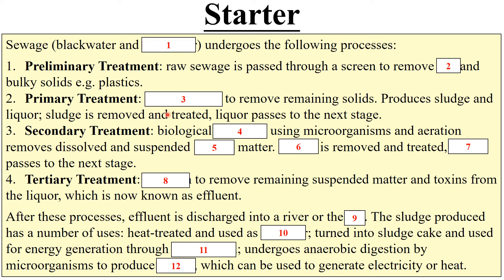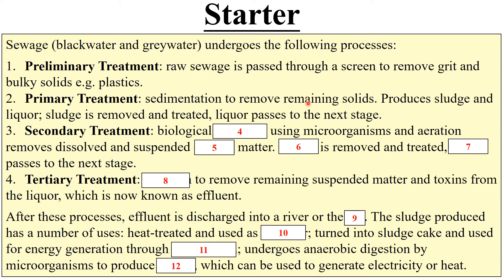Sewage is black water and grey water, and it undergoes the following processes. One — preliminary treatment: raw sewage is passed through a screen to remove grit and bulky solids, e.g. plastics. Two — primary treatment: number three is sedimentation to remove remaining solids. This produces sludge and liquor. Sludge is removed and treated. Liquor passes to the next stage.